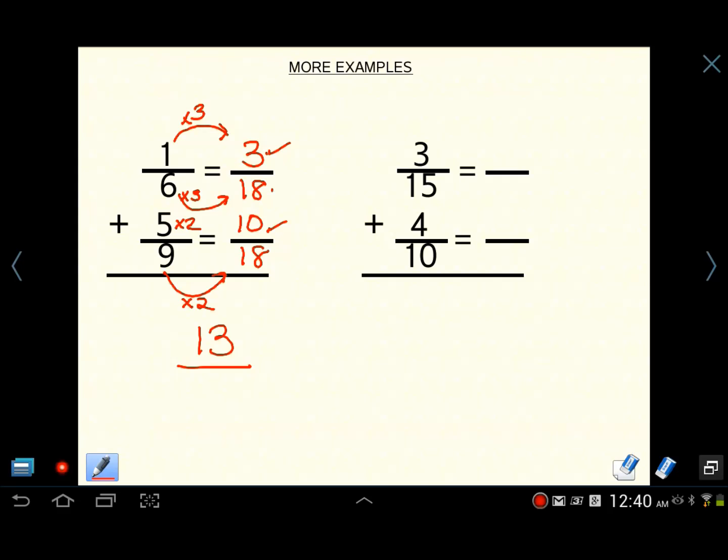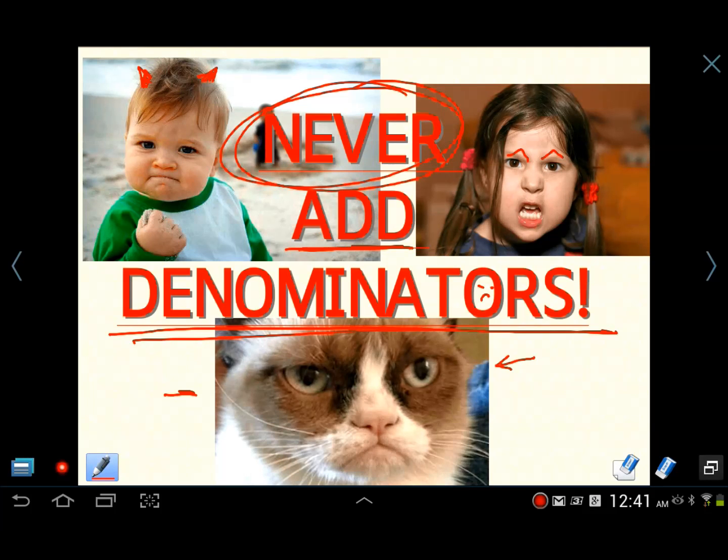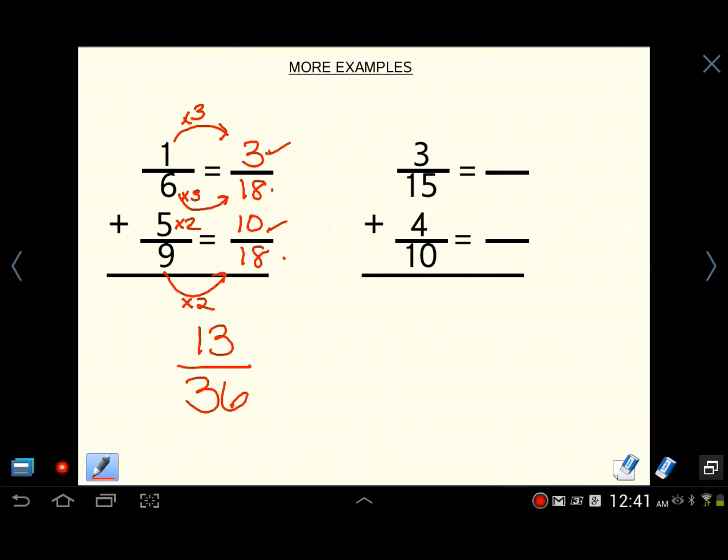And eighteen plus eighteen is thirty-six. Right? Wrong! Never add denominators. Never subtract them. Never, never, never add them. Or these people and this really cute cat will come back to haunt you in your dreams. Never add denominators. Don't ever do that. Did I say that enough? Never add denominators.